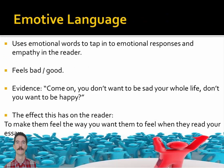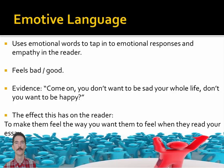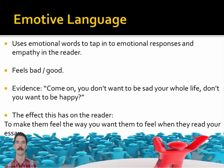Emotive language is using emotional words to tap into the emotional responses we all have built into us. In three words: feels bad or good. For example, 'Come on — you don't want to be sad your whole life. Don't you want to be happy?' The effect is to make people feel the emotions you describe, though this is very unlikely unless you're a gifted writer. The intention is to lead the reader towards a certain emotional state.